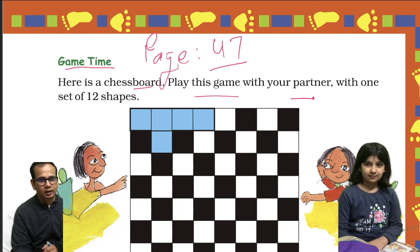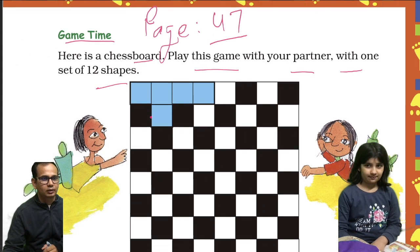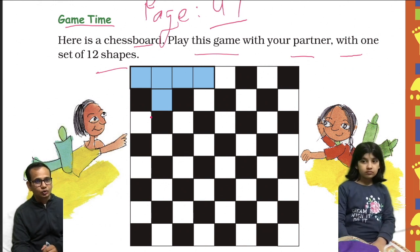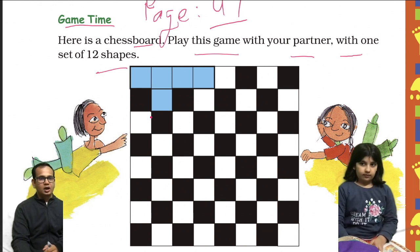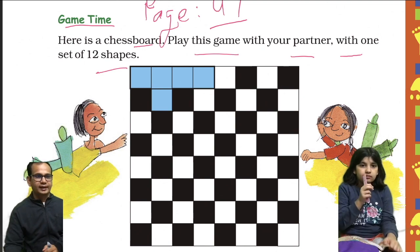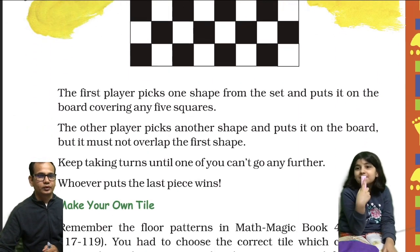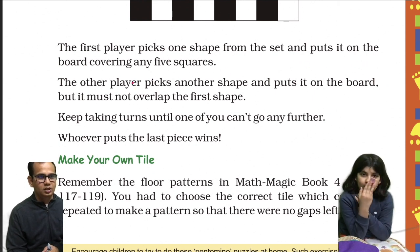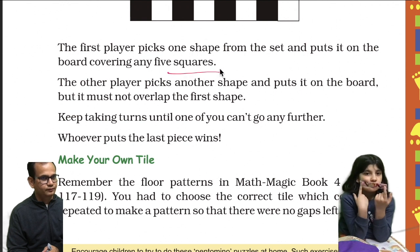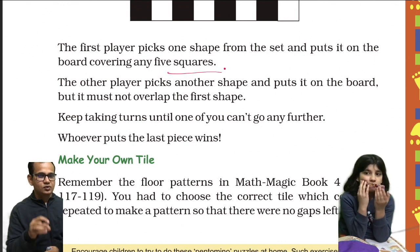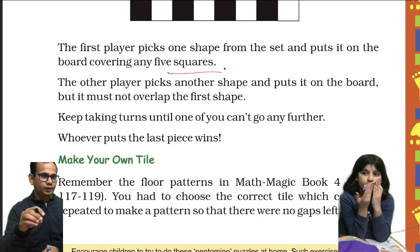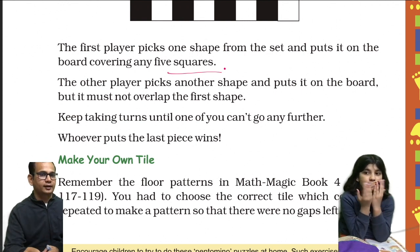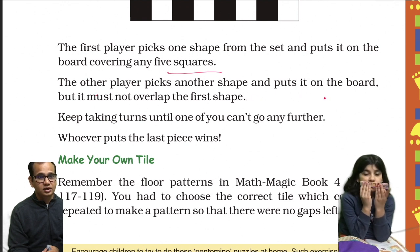Play this game with your partner with one set of 12 shapes. The first player picks one shape from the set and puts it on the board, covering any five squares. So you have to pick a shape and place it on the chessboard so that it covers 5 squares.